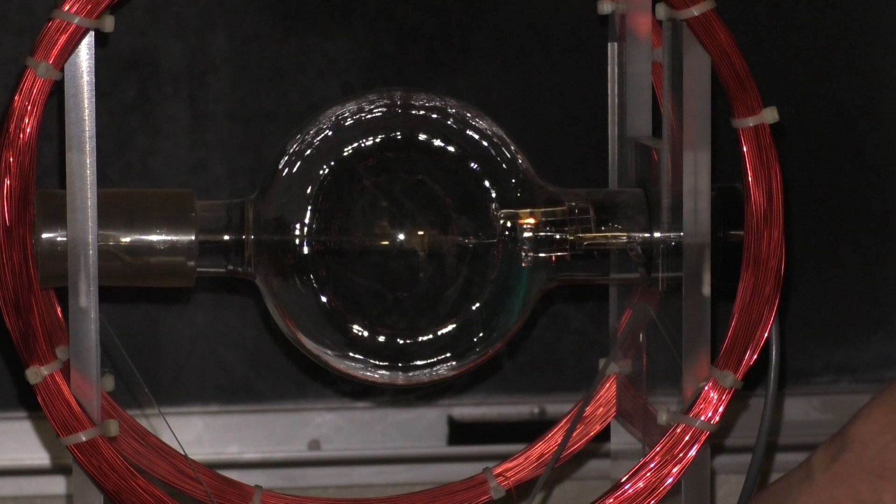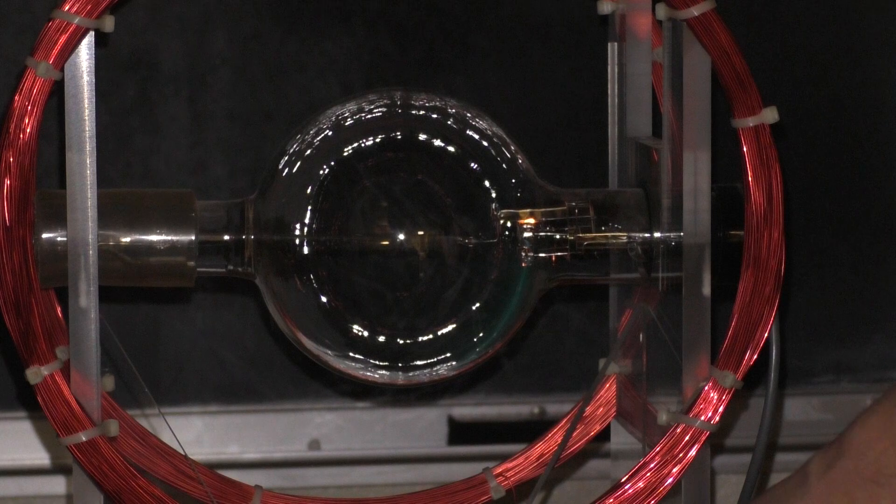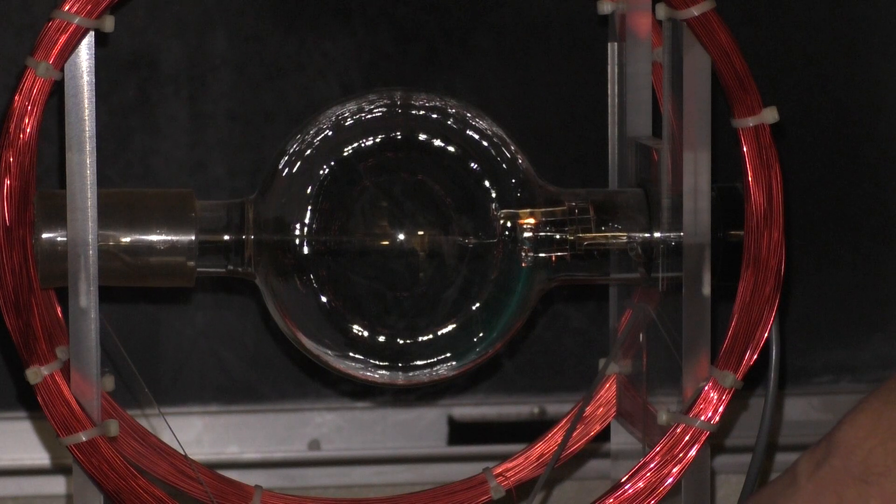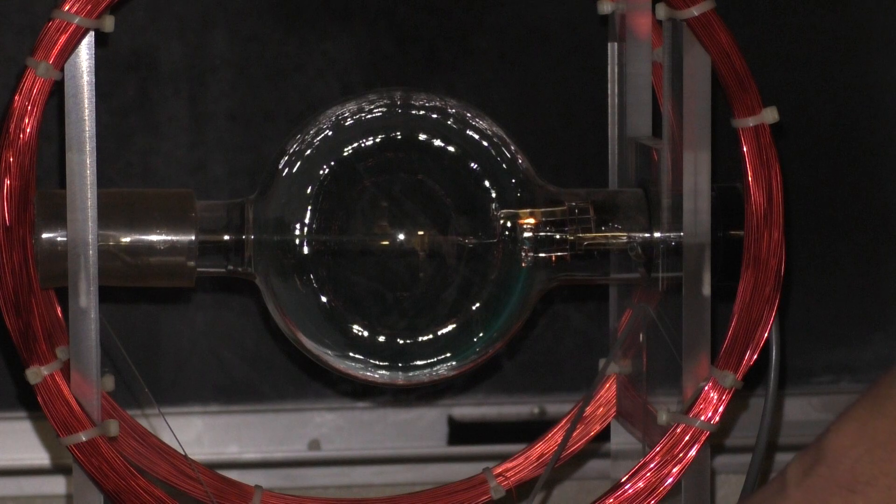That external magnetic field is created by the current going through these red coils. The green beam is still crashing into the glass bulb so you can see the green beam terminates at some point, but as soon as the beam clears the bulb you see a complete circle.